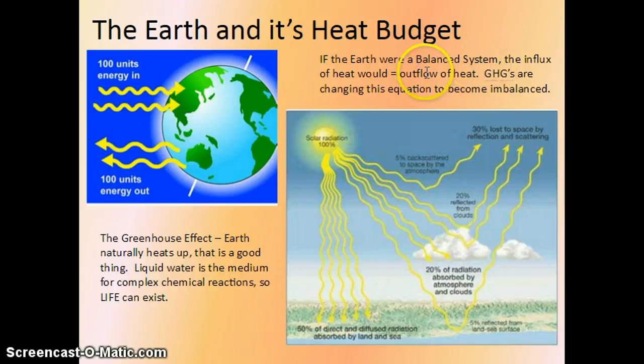But if the Earth were balanced, if it had a balanced heat budget, the influx of heat would equal that of the outflow. So in this case, greenhouse gases are changing this equation and not allowing some of that heat energy to escape into space naturally.